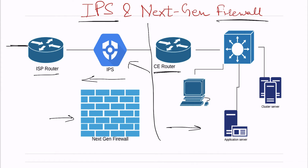90% of attacks happen from the internet because the internet is the most insecure environment where we do not have control — there is no boundary. This is the link which carries internet traffic, so I need to have a security appliance at the perimeter, at this place. In this diagram I have positioned IPS, but I can also place my next gen firewall here.